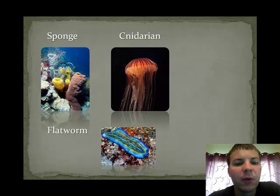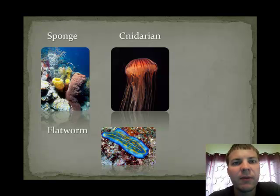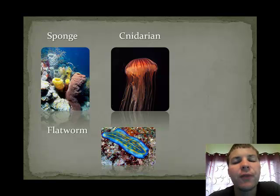Next, we have the flatworm group. Flatworms are very colorful animals. They are aquatic, tend to be found in tropical regions, and, just as the name will suggest, they are very flat.